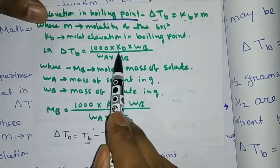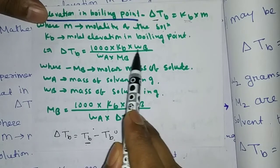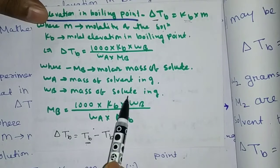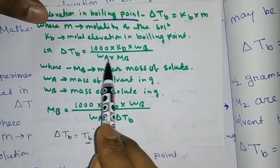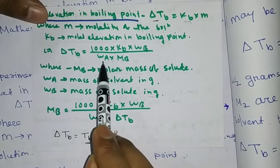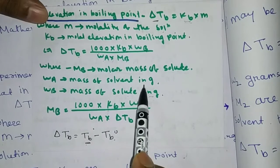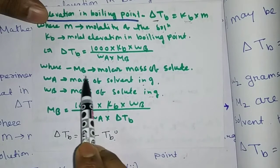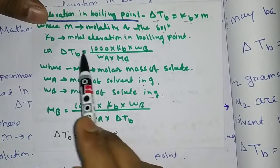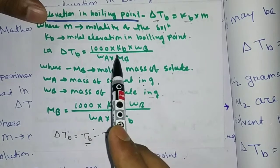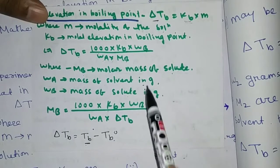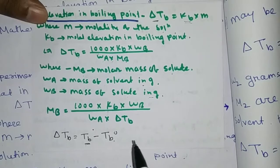The ΔTb equation is: ΔTb = (1000 × K_B × WB) / (WA × MB), where WB is the mass of the solute in grams, WA is the mass of the solvent in grams, and MB is the molar mass of the solute. Generally, both the mass of the solvent and the mass of the solute are represented in grams.